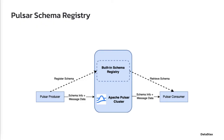Like Kafka, Pulsar also has a schema registry that allows messages to be published or consumed following a certain format, also known as a message schema. Better than Kafka, the schema registry in Pulsar is built-in, which means it shares the same set of server hosts as the Pulsar cluster.